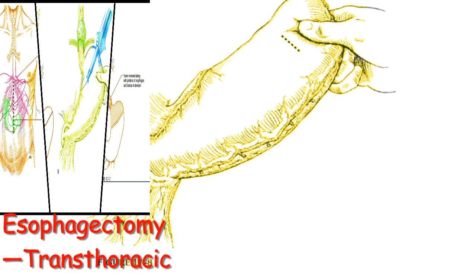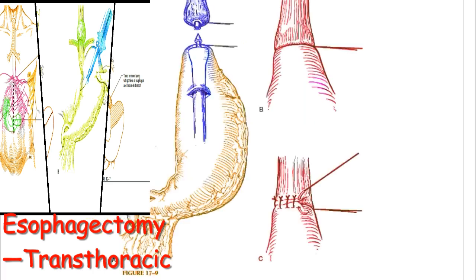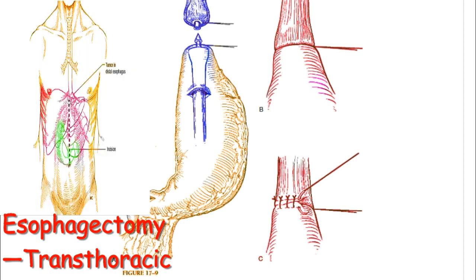The hand-sewn anastomosis is performed in two layers. First, the posterior row of interrupted 3-0 silk stitches is placed between the posterior wall of the esophagus, approximately 0.5–1.0 cm proximal to the cut end of the esophagus, and the fundus of the stomach (figures 17-7 and 17-8). The anesthesiologist then places a nasogastric tube as the surgeon guides it from the esophagus, through the gastrotomy, and into the stomach. A running 4-0 absorbable suture is used to perform the mucosa-to-mucosa anastomosis. An anterior row of interrupted 3-0 silk Lembert stitches completes the anastomosis (figure 17-9).